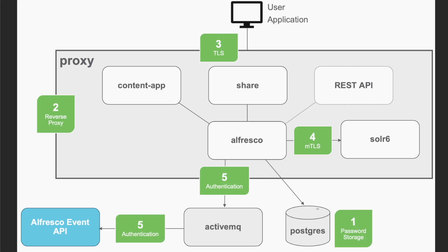Our first point today is related to password storage. Alfresco stores user passwords in the database using a hashing algorithm to avoid having plain text in the database. We will be reviewing the different hashing algorithms available to get that digest from a user password. This step is only relevant for deployments using default Alfresco authentication, since for other approaches like LDAP or Alfresco Identity Services, password management is out of scope of the Alfresco platform.